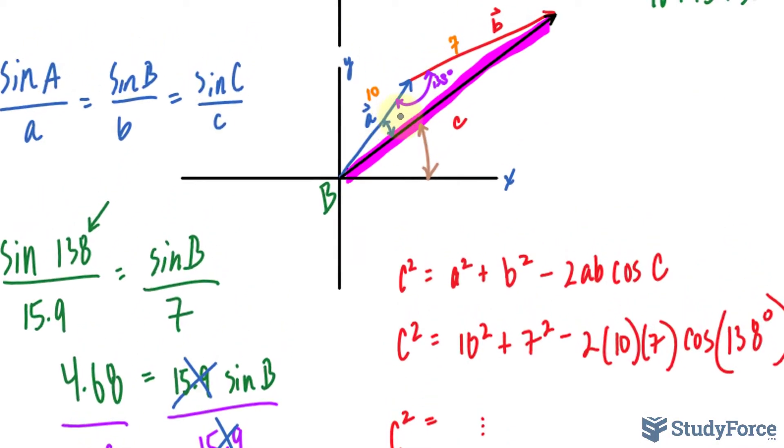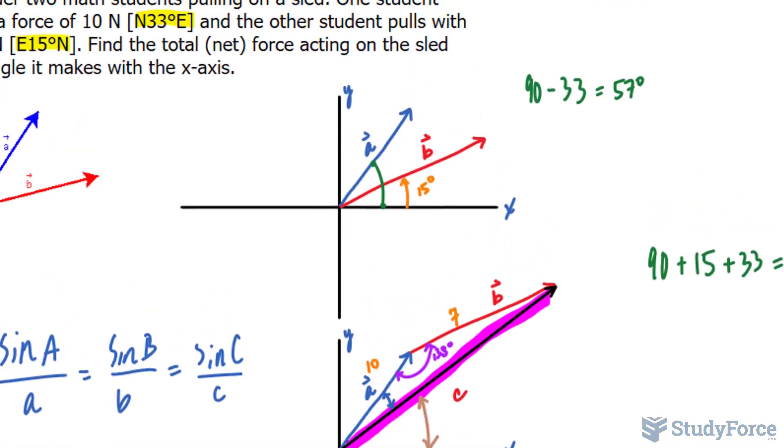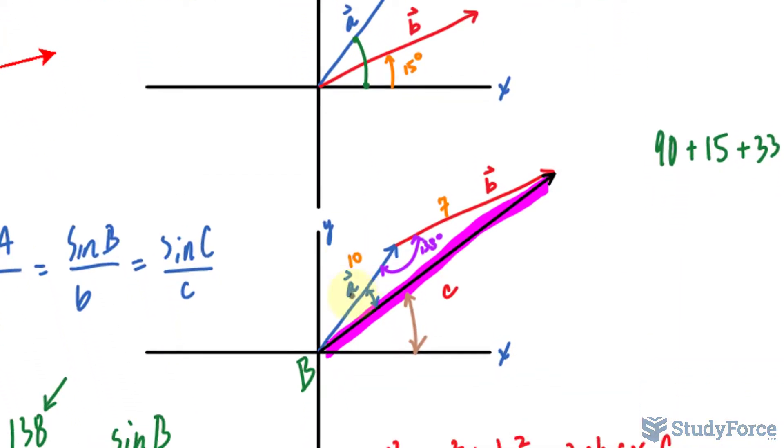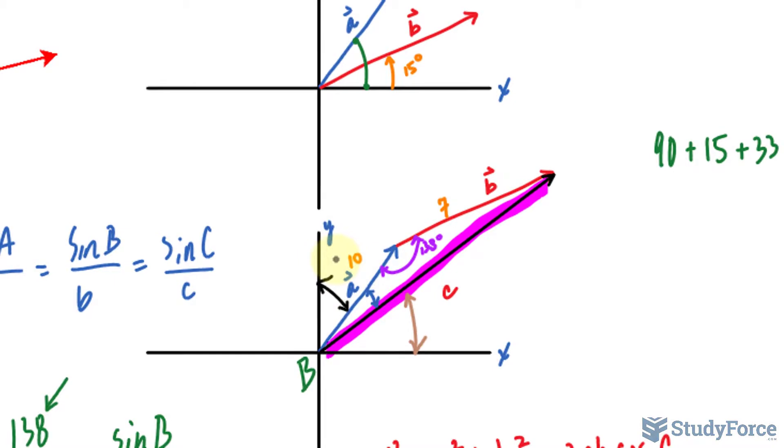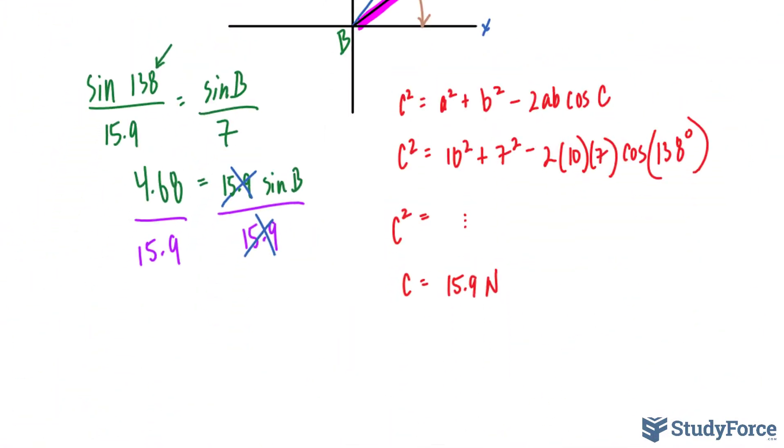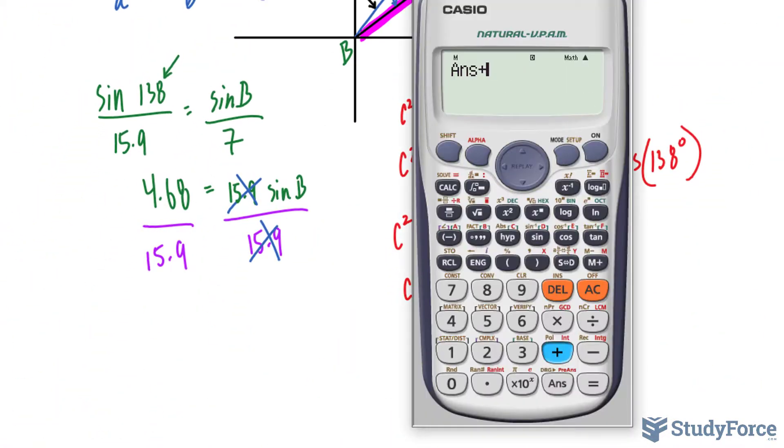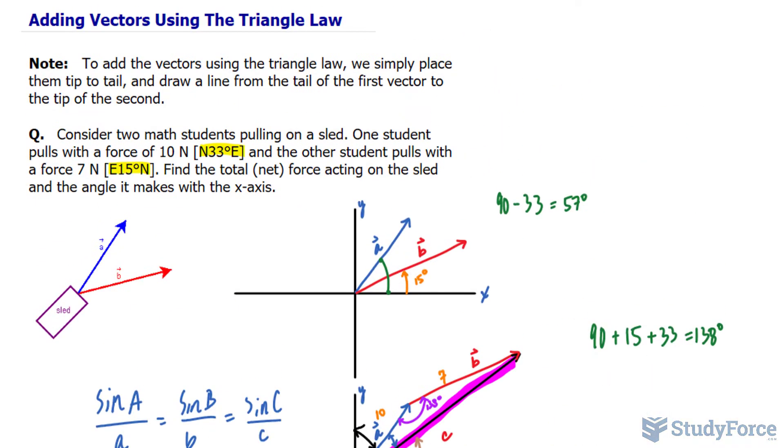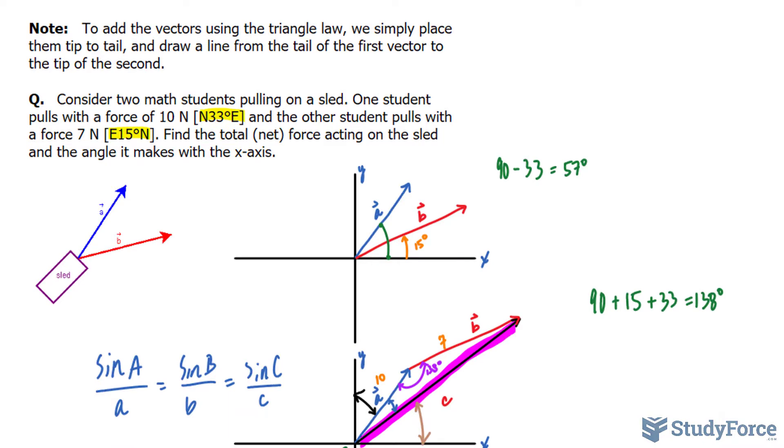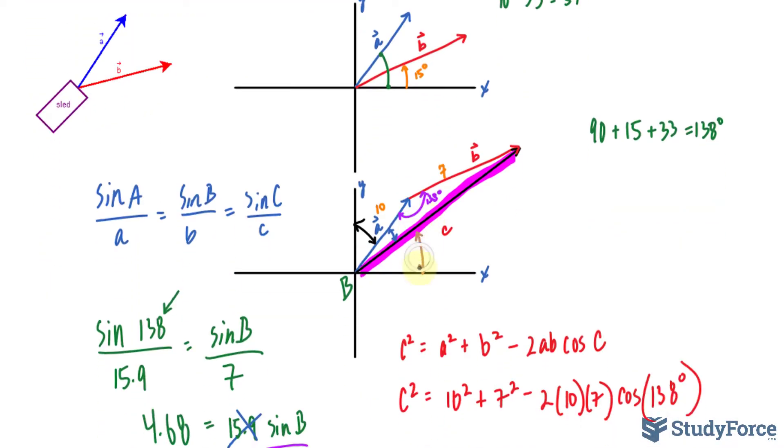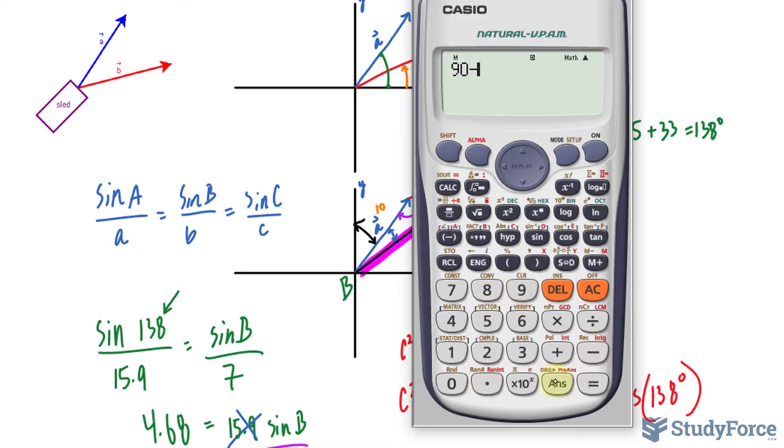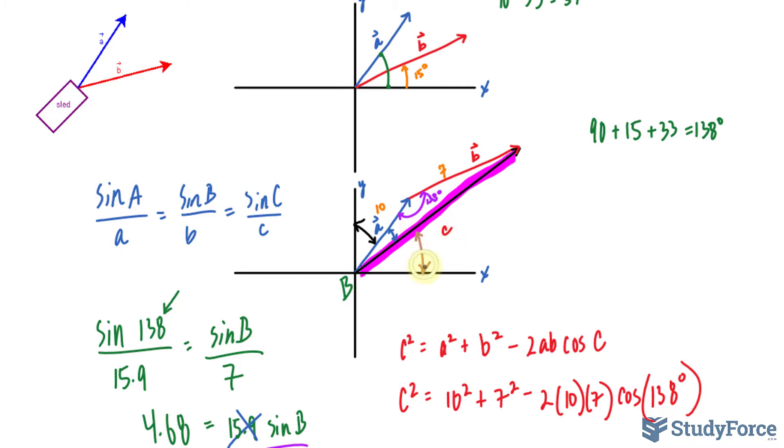So this angle right here, angle B is 17.1. We know that the angle from here to here is 33. 17.1 plus 33 is equal to 50. And since we want the angle that it makes with the x-axis, being this brown one, we subtract this value from 90, which equals roughly 40 degrees. So this angle is 40 degrees.